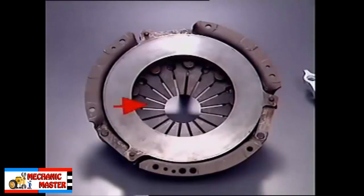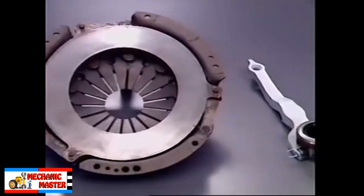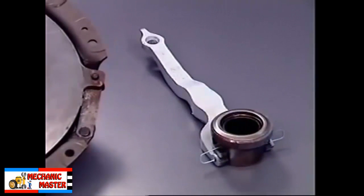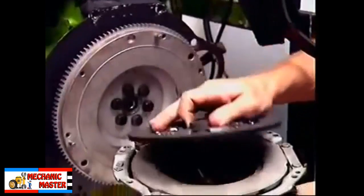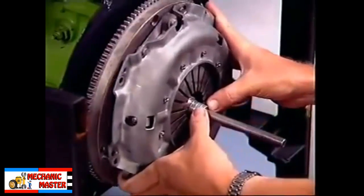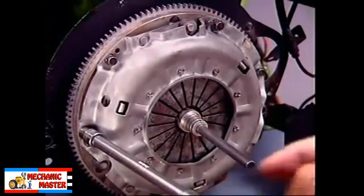The assembly also includes a release bearing and operating fork. The friction disc is sandwiched between the machined surfaces of the flywheel and the pressure plate when the pressure plate is bolted to the outer edge of the flywheel face.